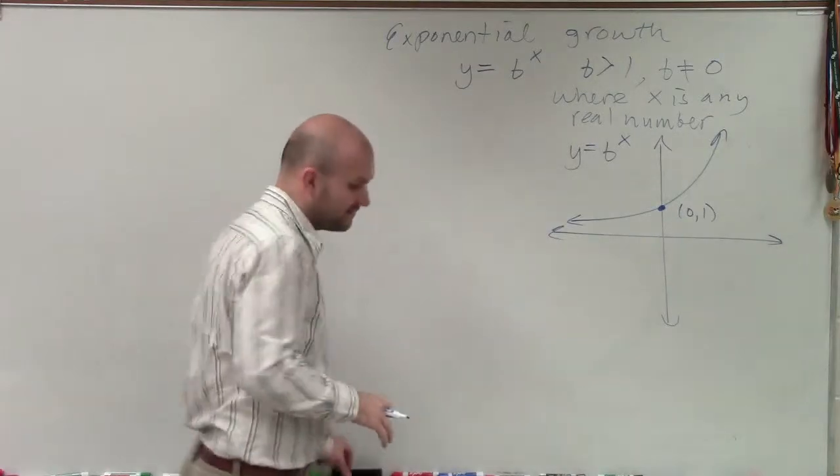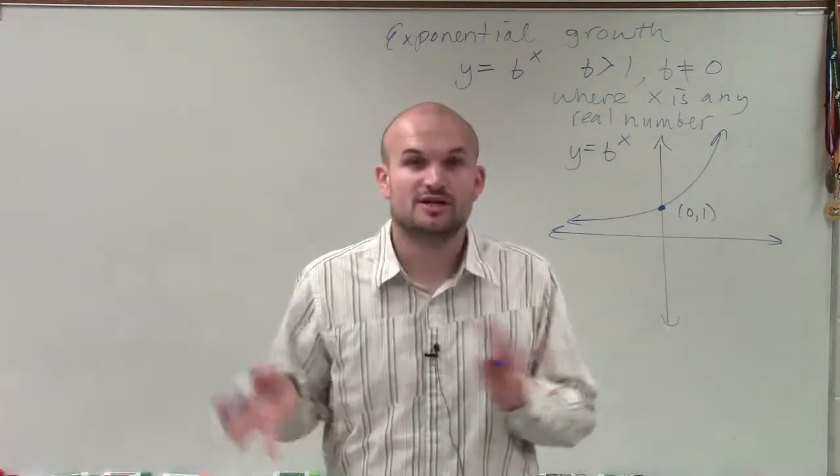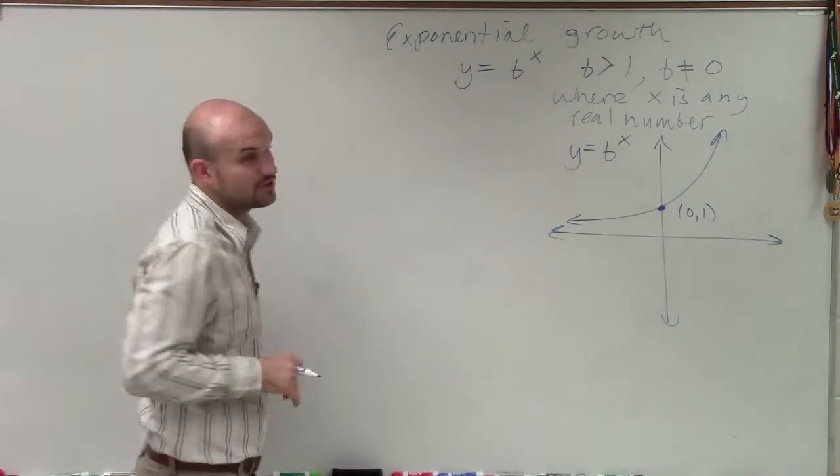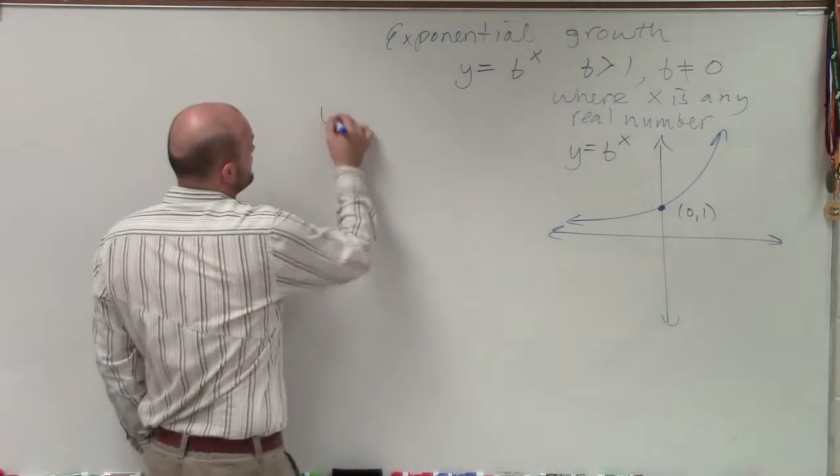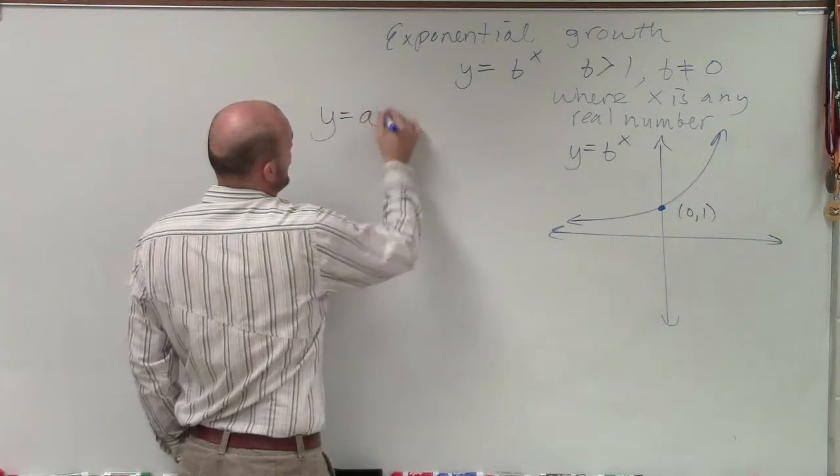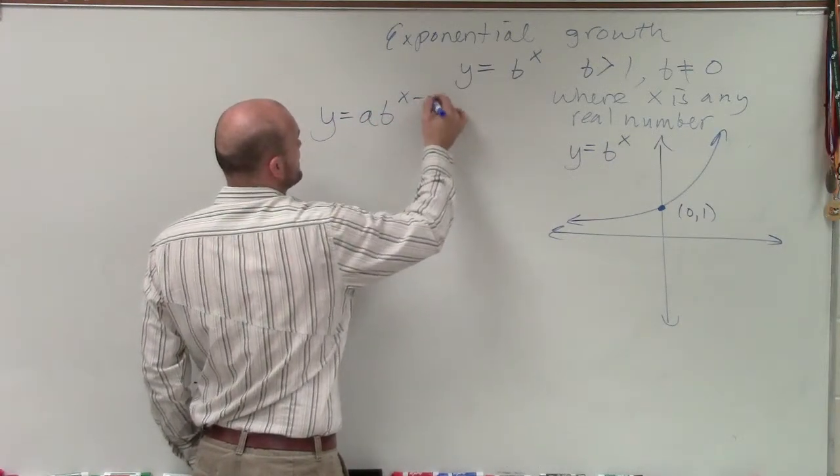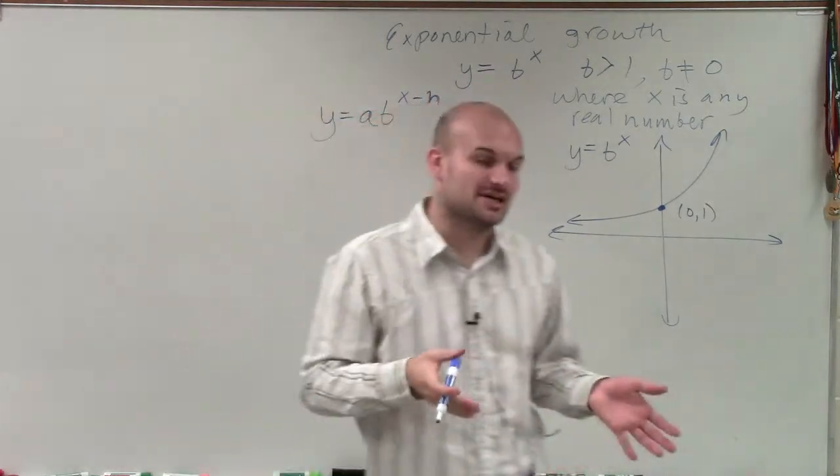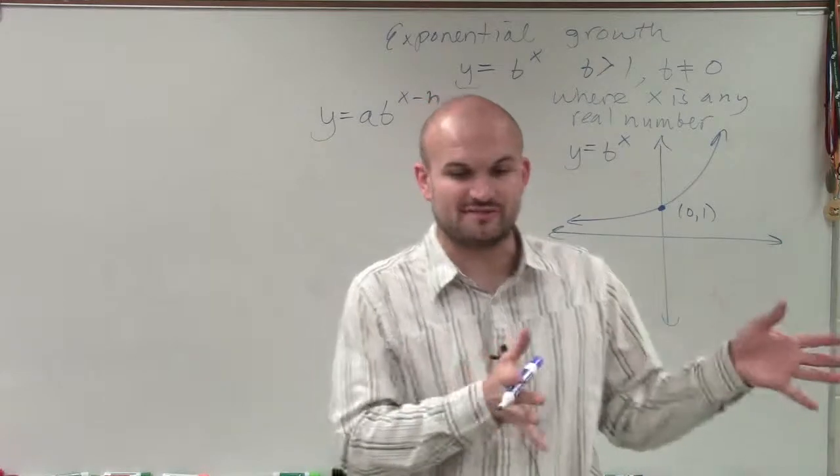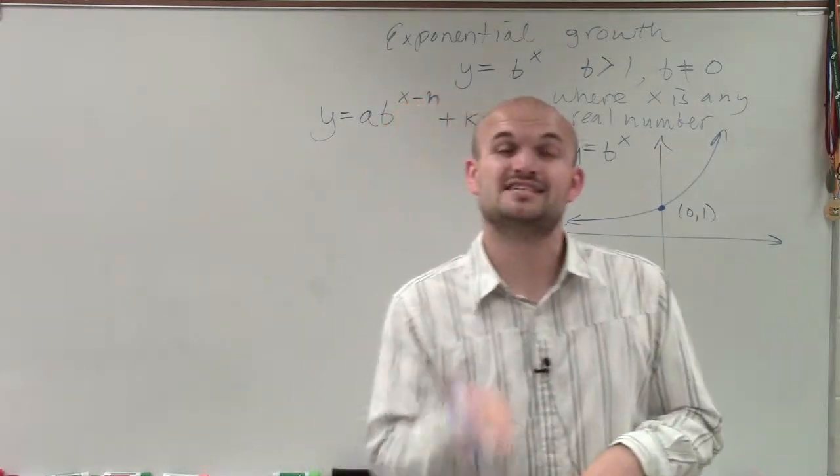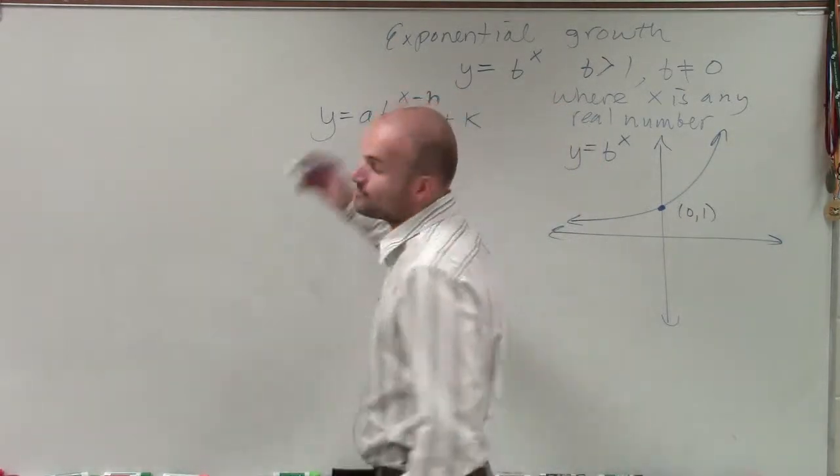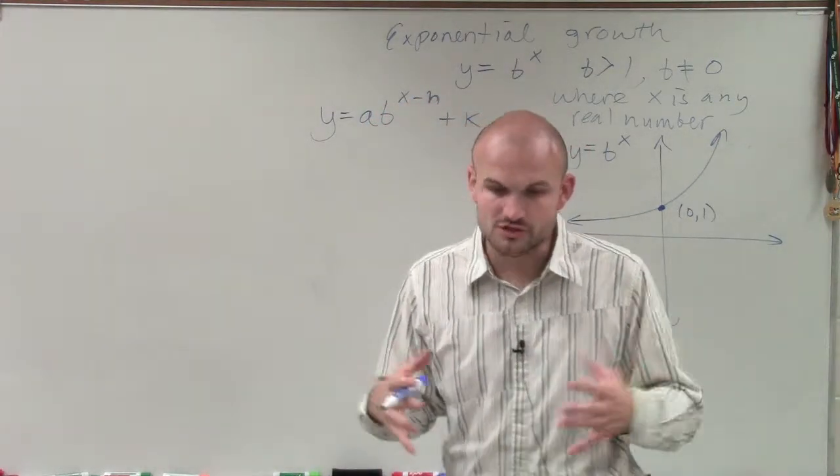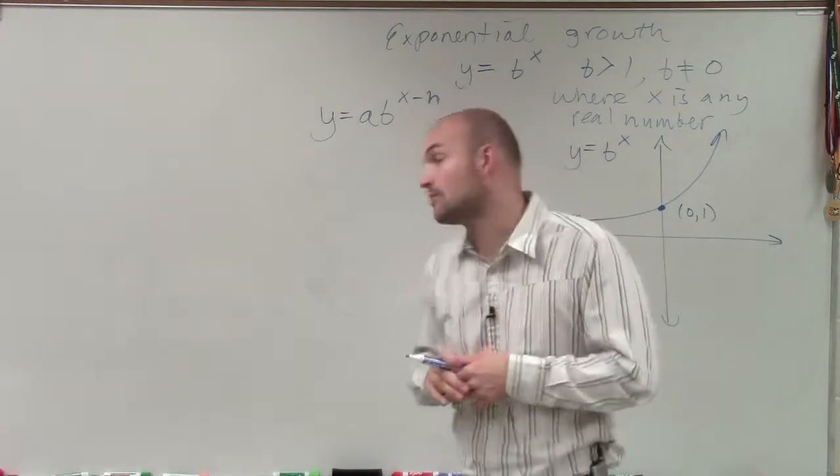If you remember quadratics, we talked about shifting and reflecting. When dealing with an exponential graph, we have exactly the same thing. We can write that as y equals a times b raised to the (x minus h) plus k. Our h is going to shift the graph left and right. Our k is going to shift the graph up and down. And our a and b are going to dilate, stretch, and compress the graph vertically and horizontally.